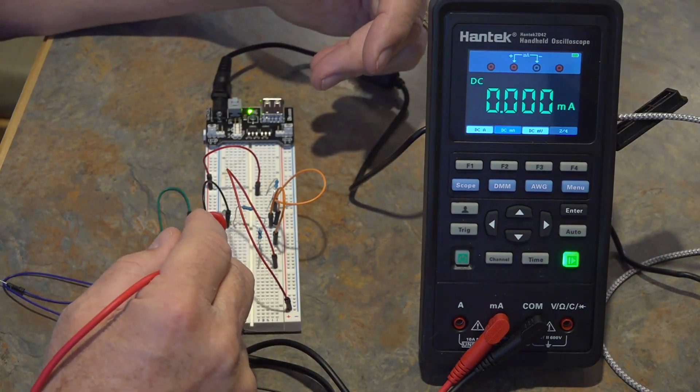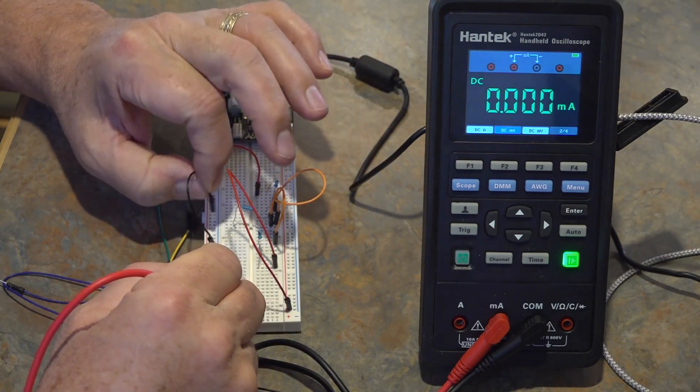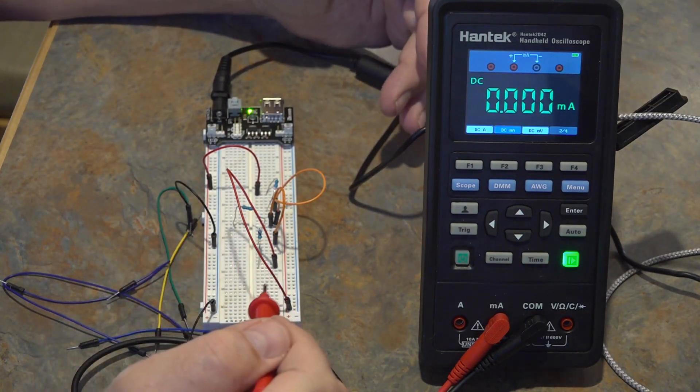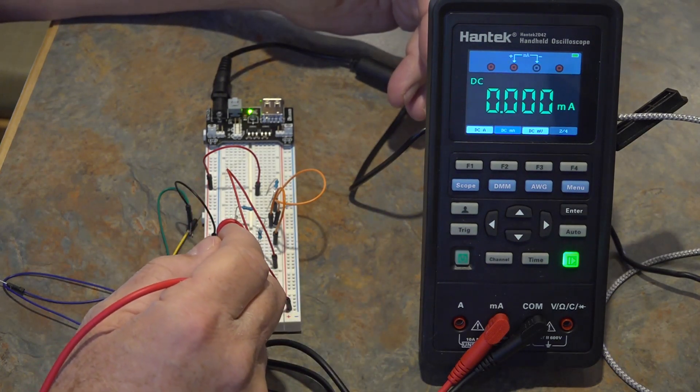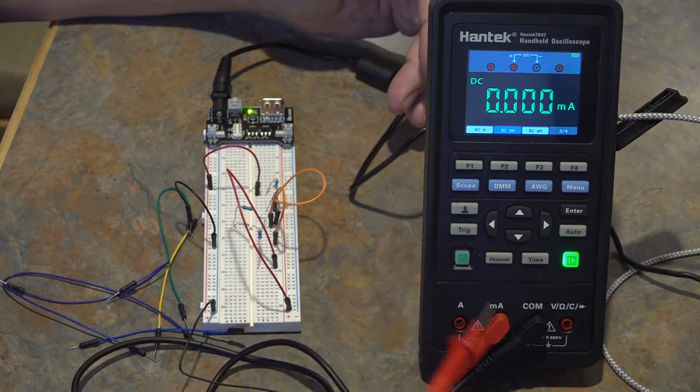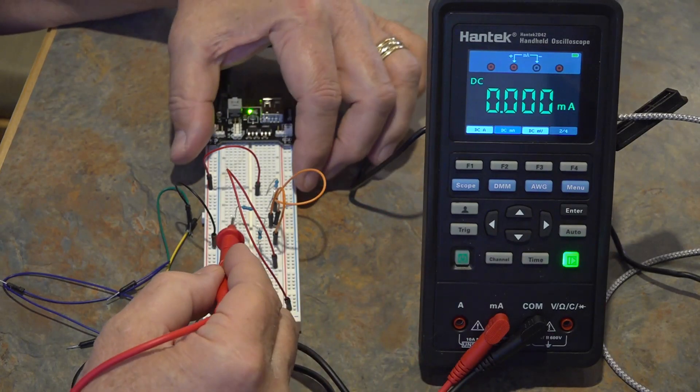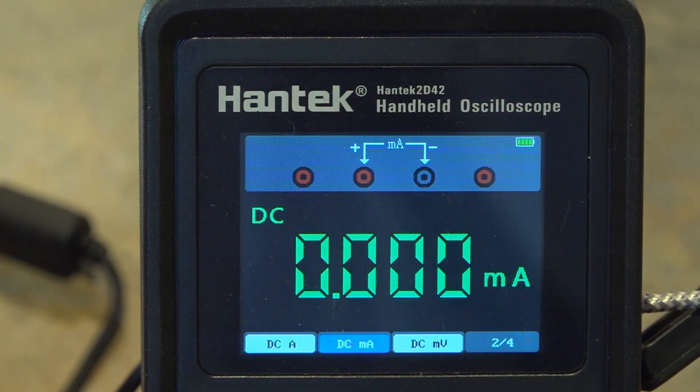So if I disconnect the ground coming off the R3, the 1k, and if I measure the current there at that point that's about 4 milliamps. So that's at node C.